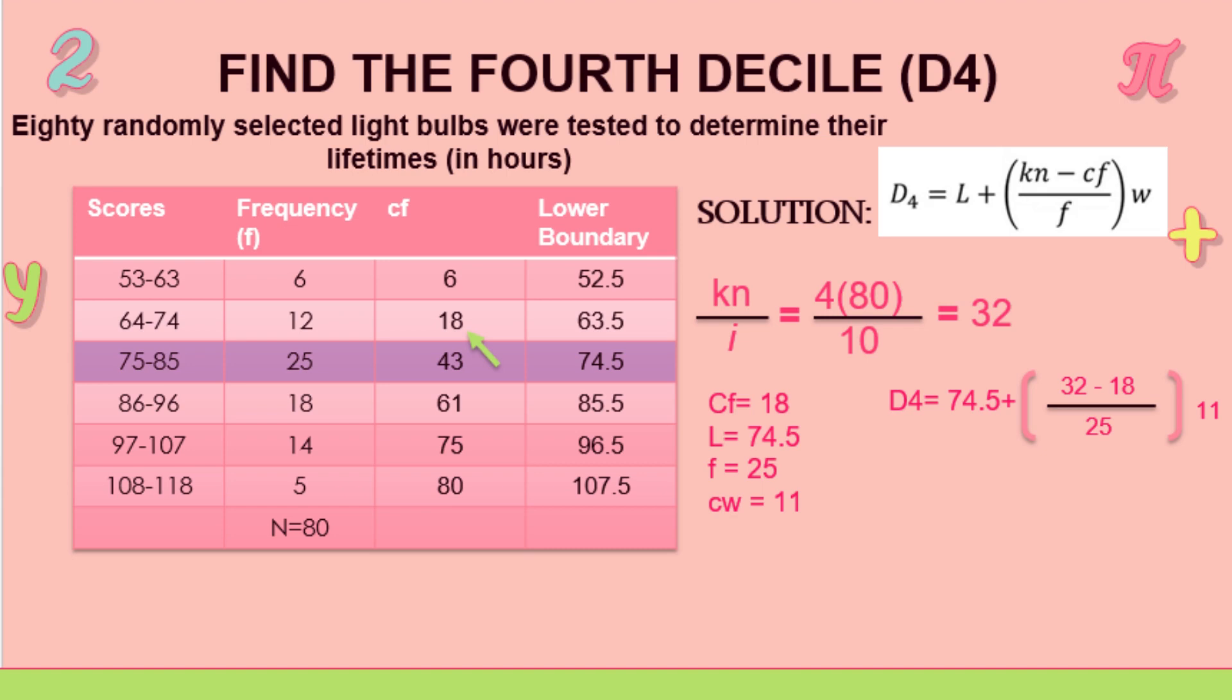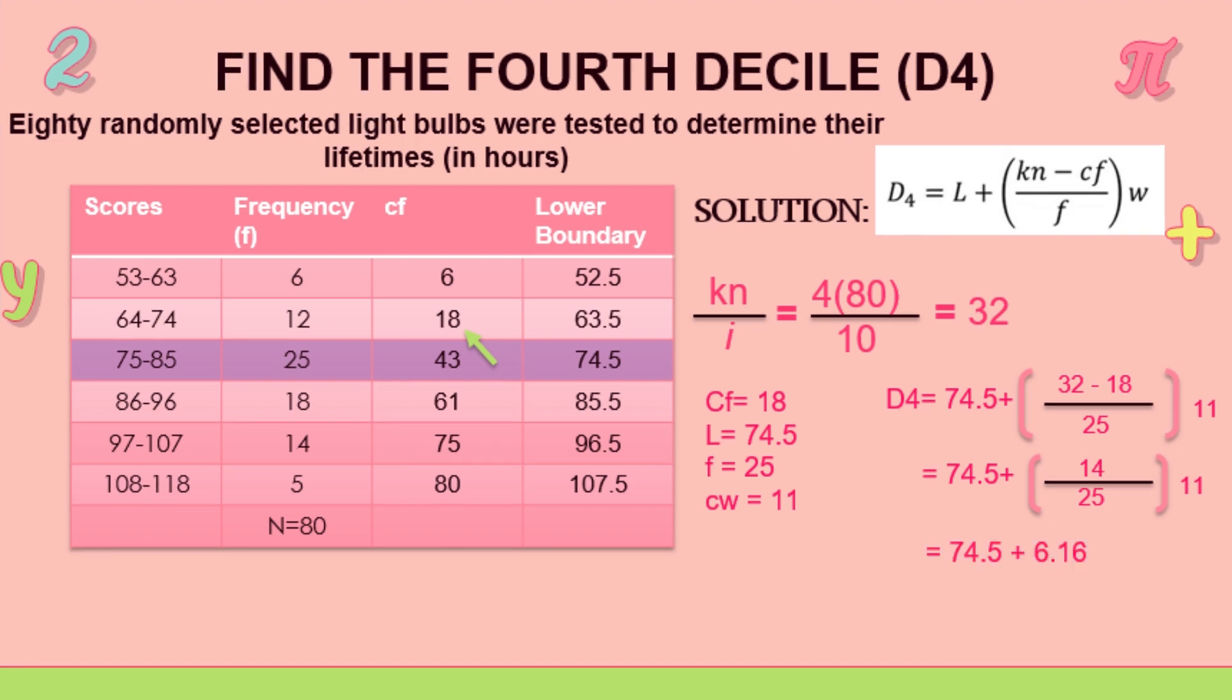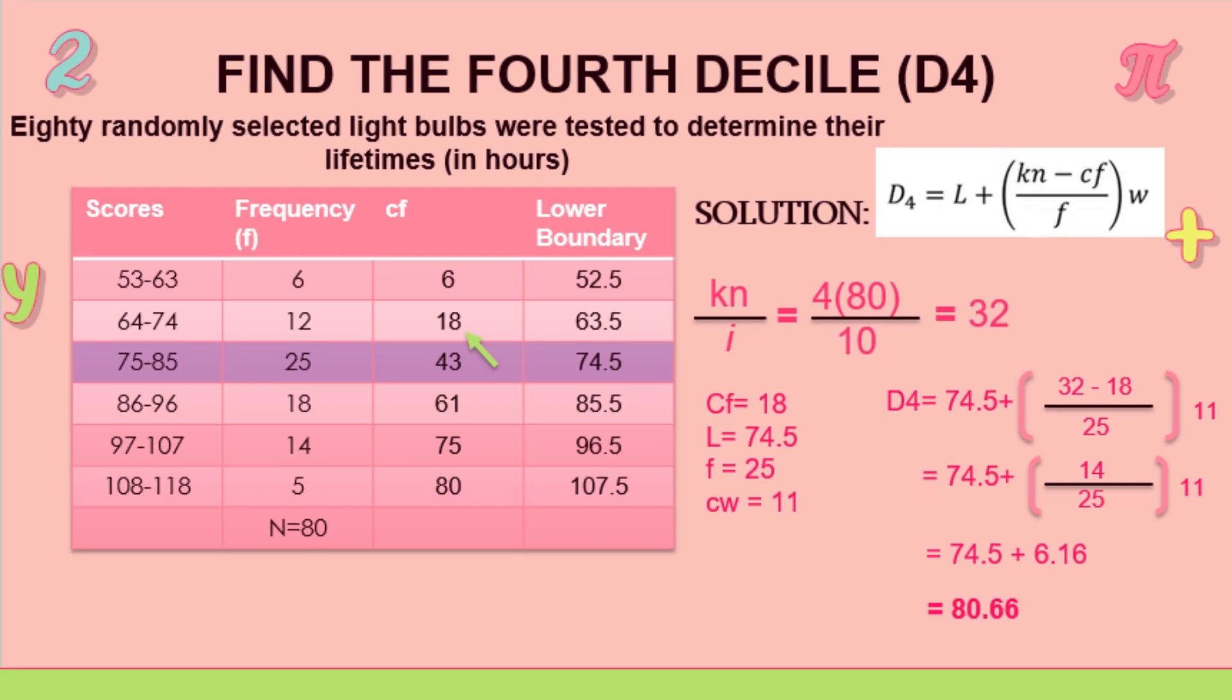So that's how we're going to solve it. 32 minus 18, 32 is from the first solution. 18 is the cumulative frequency, and 25 is the frequency. And then 74.5 plus parentheses 14 over 25 close parentheses times 11. And we have 74.5 plus 6.16. The answer is 80.66. So that's our answer for the second example.